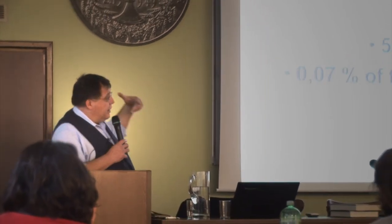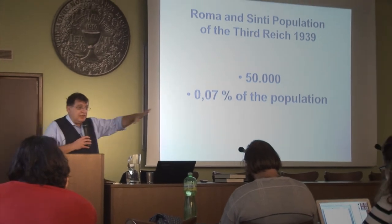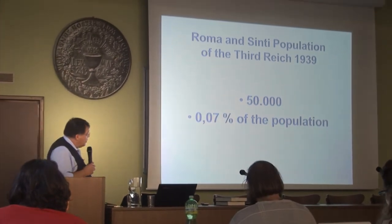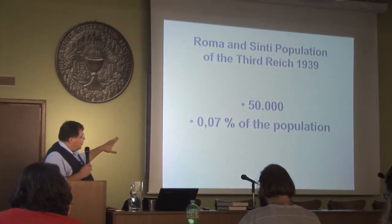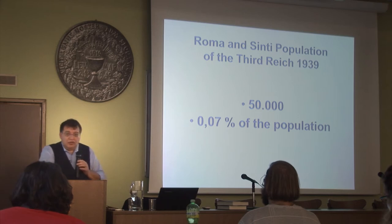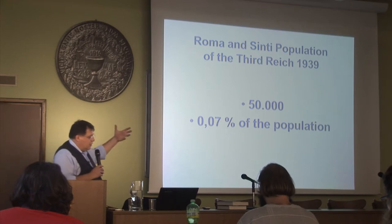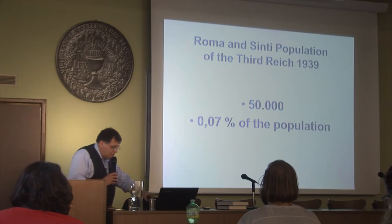All this — the population was not very big. When we come to 1939 the Nazis counted the Roma population of the territory they were occupying and counted about 50,000 Roma — 0.07% of the population of the Third Reich and occupied territories. So we are not talking about a big social question here. But the approach of the Nazis towards the Roma was actually ideologically and racially motivated.